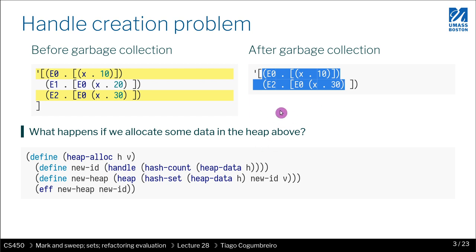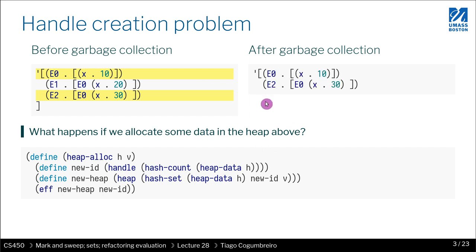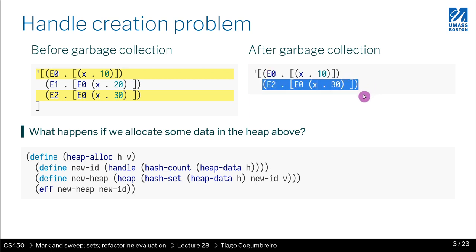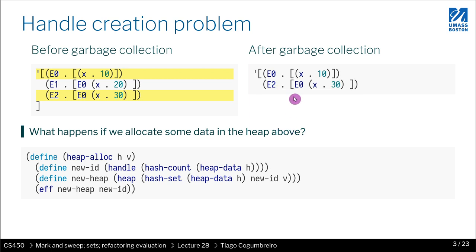In this case you have two environments, so the new handle would be environment two — but you already have an environment two. So if you do a push, what would happen is you would overwrite this location. And by overwriting this location, you would have an error: any old closures that are pointing to E2 would now be pointing to the wrong E2, so your code wouldn't work correctly.